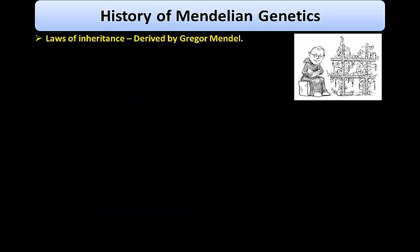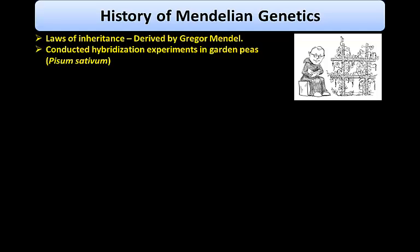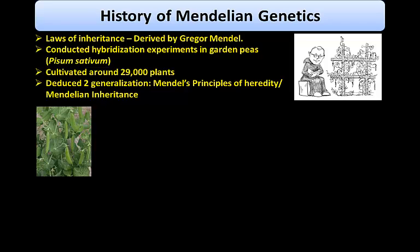Now let's have a look at the history of Mendelian principles. The laws of inheritance were derived by Gregor Mendel, a 19th century Austrian priest and monk. He conducted hybridization experiments on garden peas called Pisum sativum between 1856 and 1863, cultivating and testing nearly 29,000 pea plants. From these experiments, he deduced two generalizations which came to be known as Mendel's principles of heredity, or Mendelian inheritance.